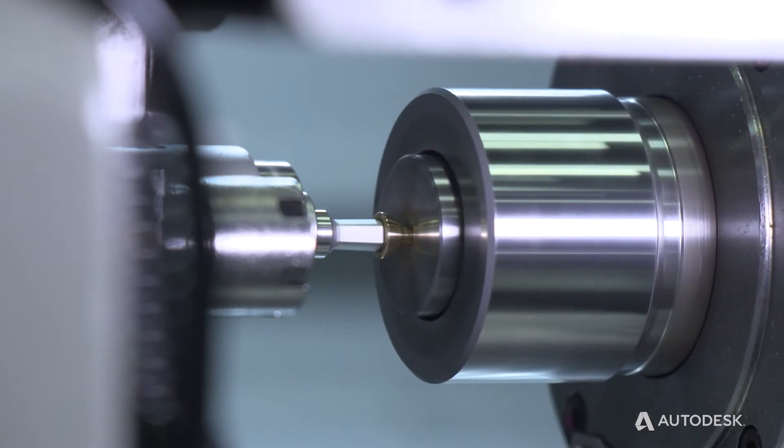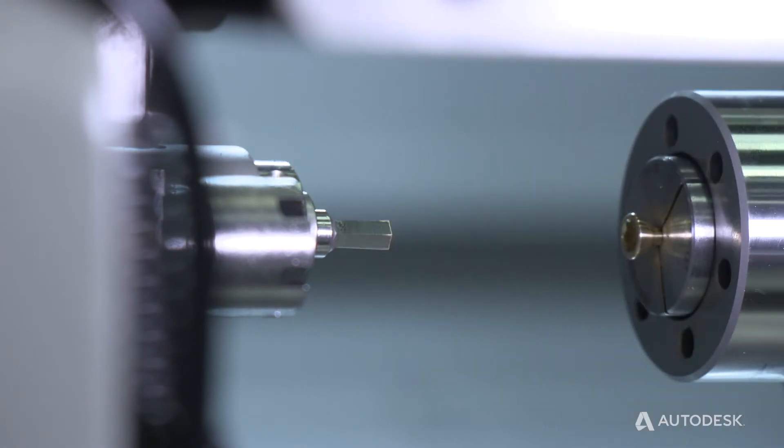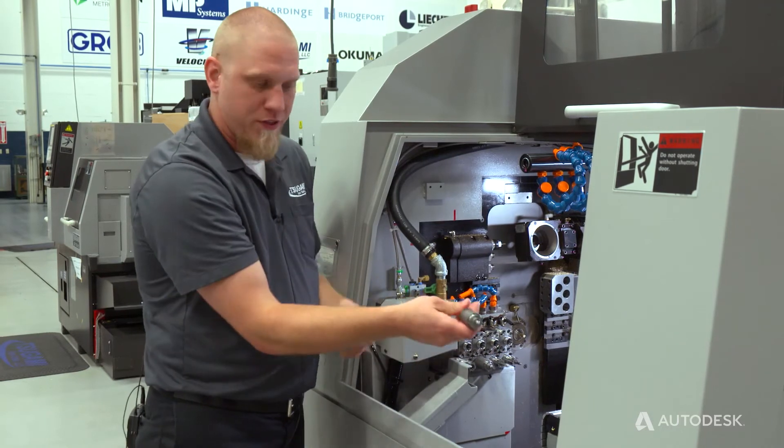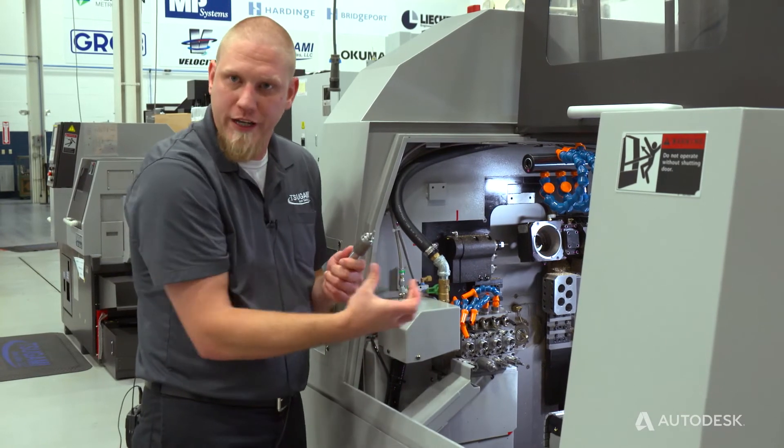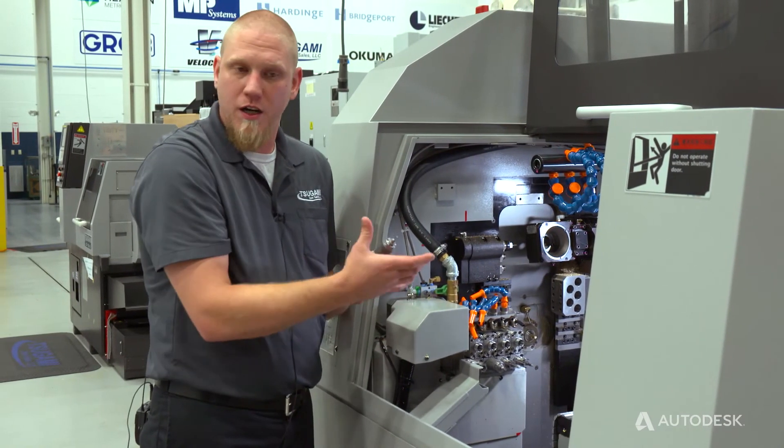Once you have your pocket trammed in for a drill or for a tap or anything, you can pull that tool right out, put this one right in and touch it off in Z and you're right on center. You don't have to worry about floating in a holder like the old style broaching tools.